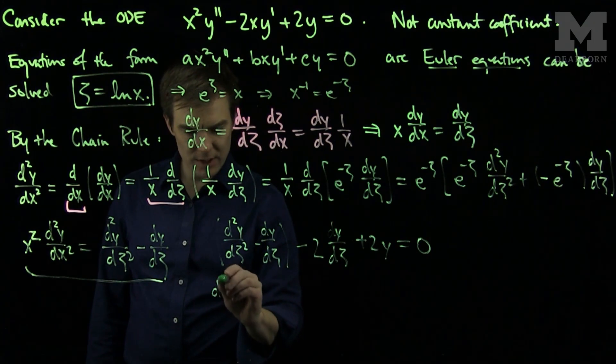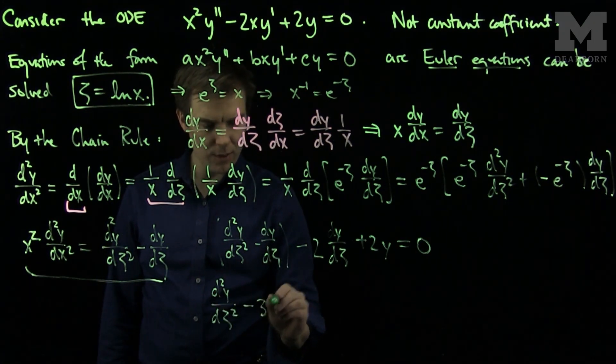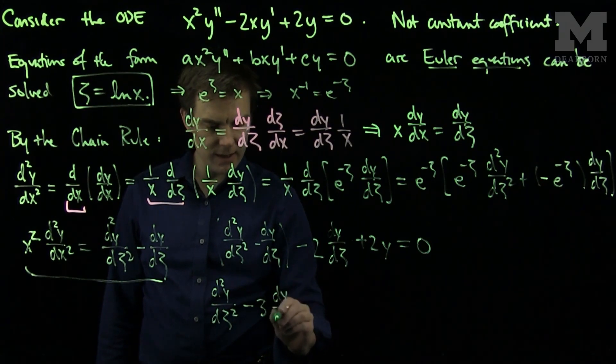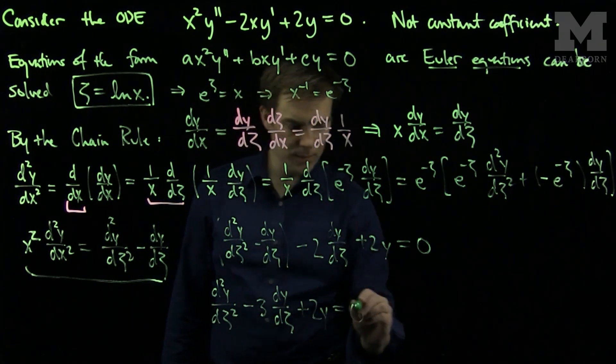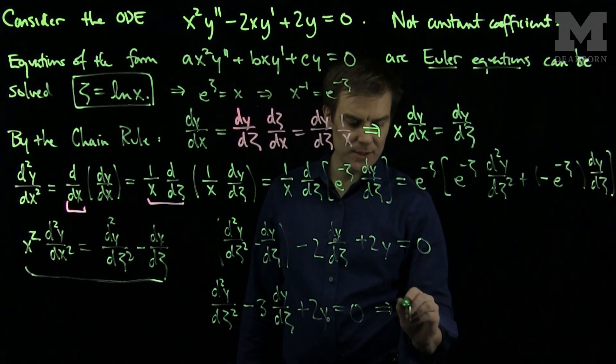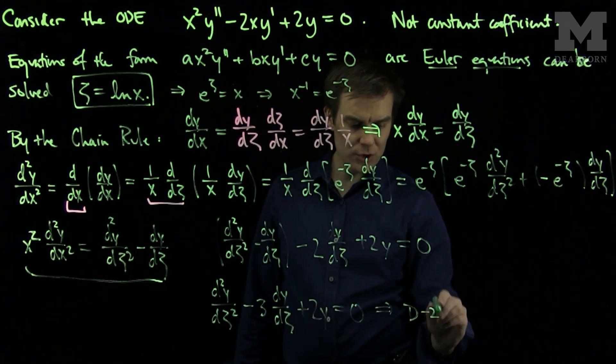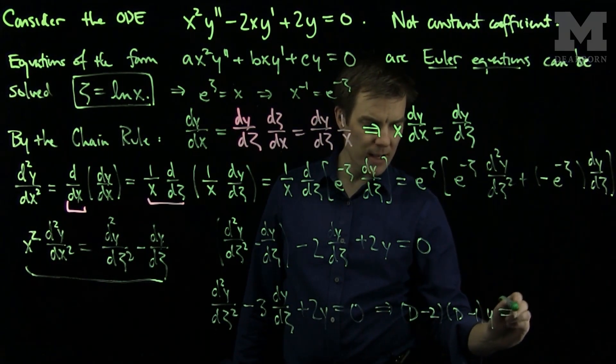Which we can rewrite as d squared y d zeta squared. And then I have a minus 3 dy d zeta plus 2y equals 0. Well in our differential operator notation we can factor this as d minus 2 times d minus 1 applied to y equals 0.